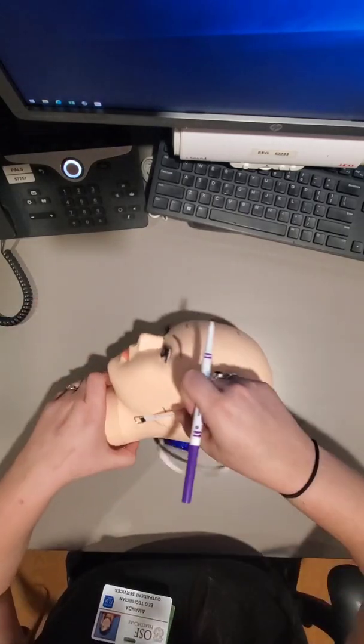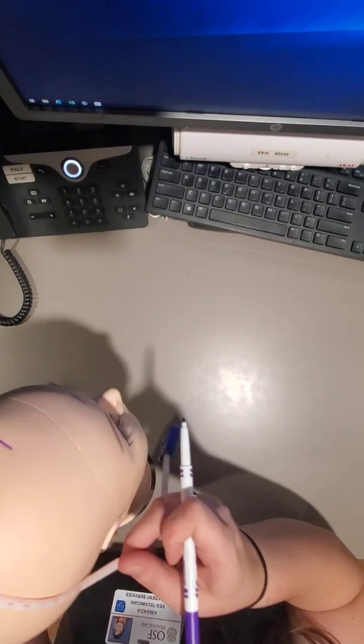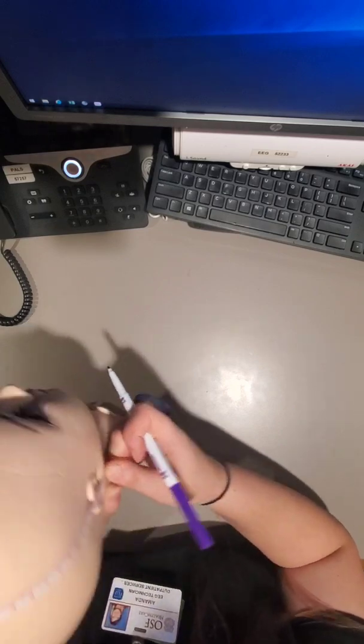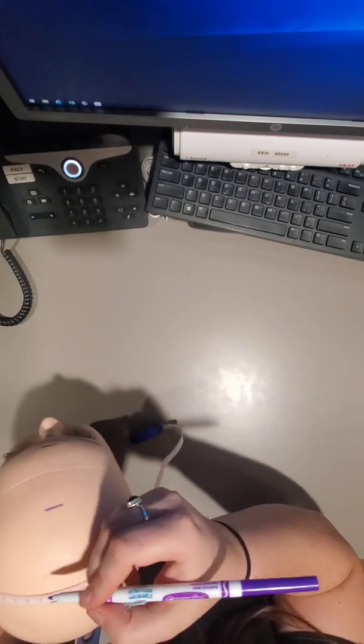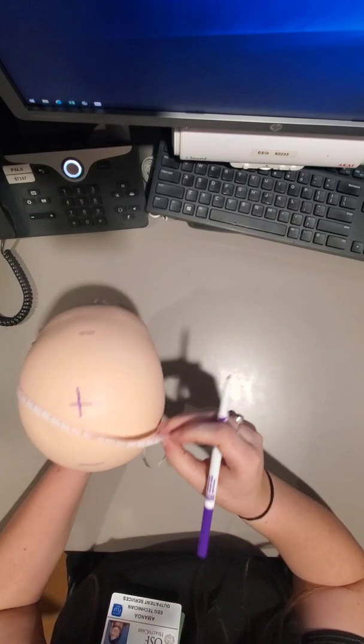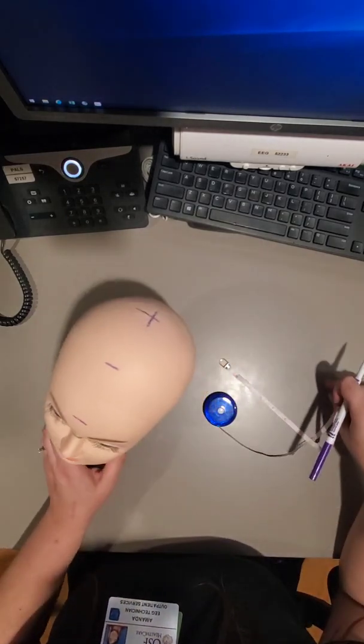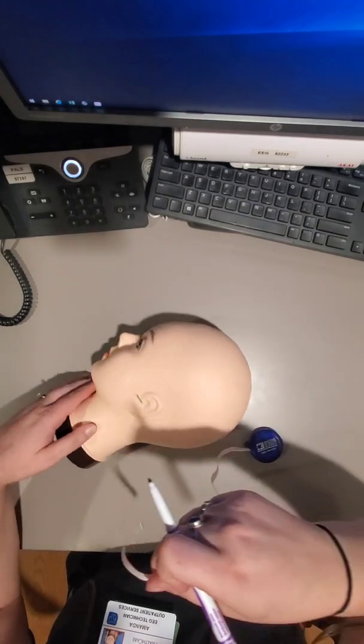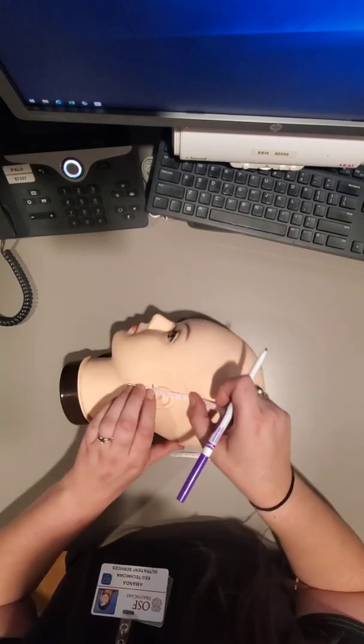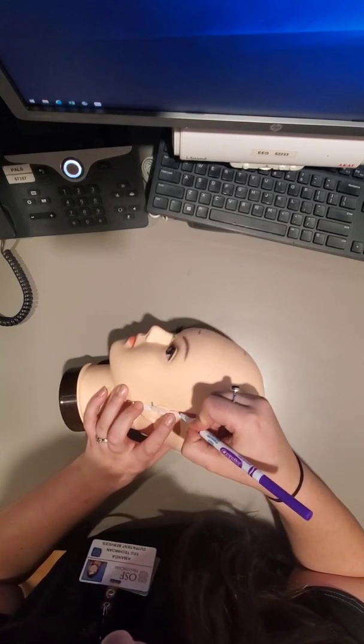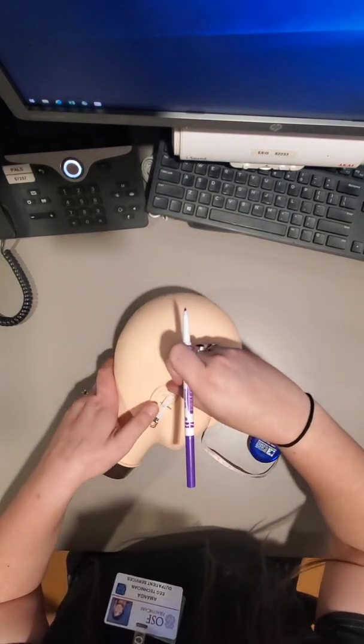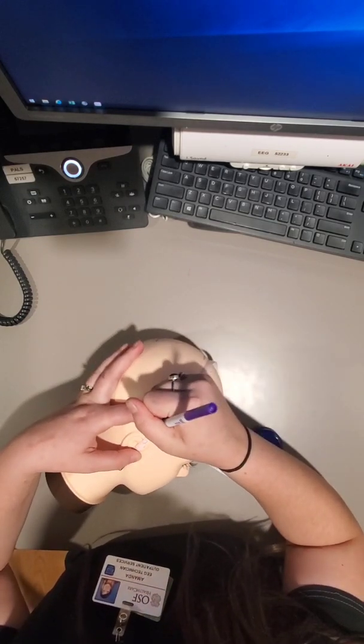I'm going to measure the left pre-auricular point through CZ to the right pre-auricular point. 36.5 divided by 2, that's 18.3. So I'll cross my CZ measurement. And then I'll do 10% of 36.5, 3.7. And then the same over here on the right pre-auricular point, 3.7.